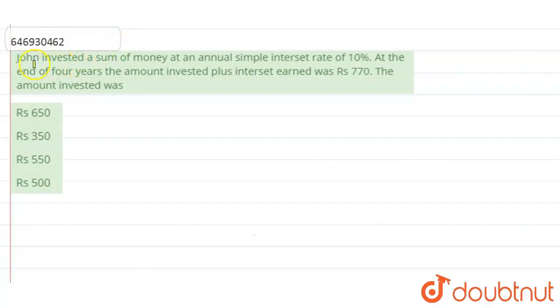Hello everyone, here is the question. John invested a sum of money at an annual simple interest rate of 10%. At the end of 4 years, the amount invested plus interest earned was Rs 770.